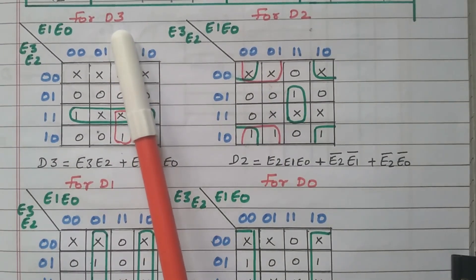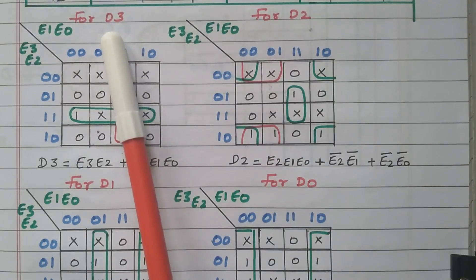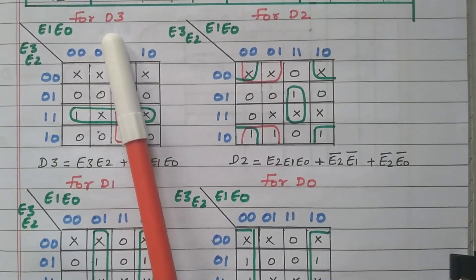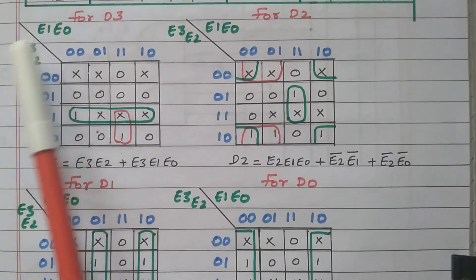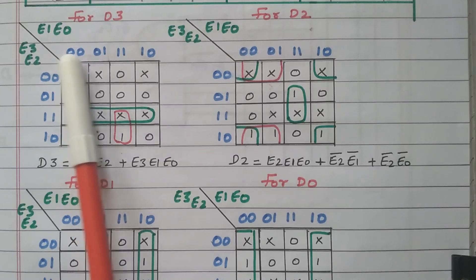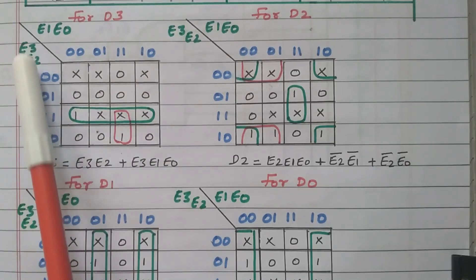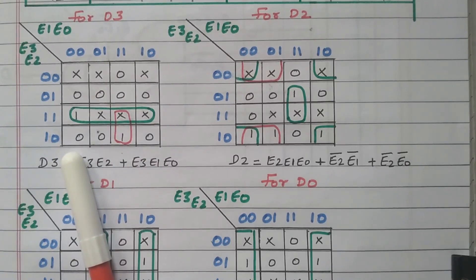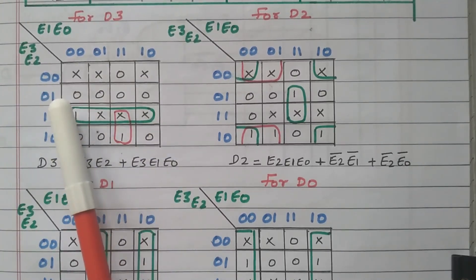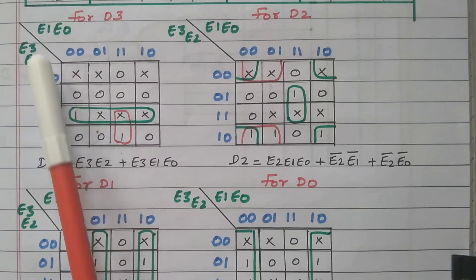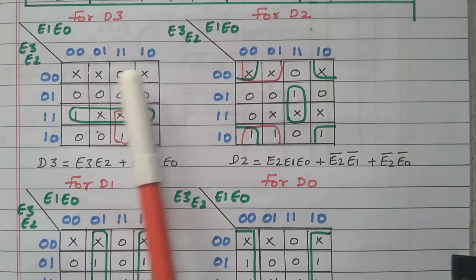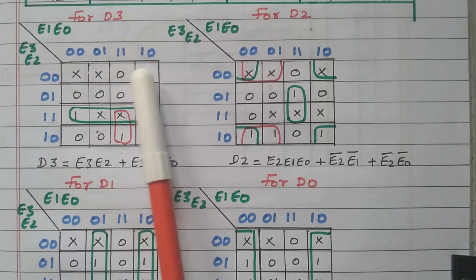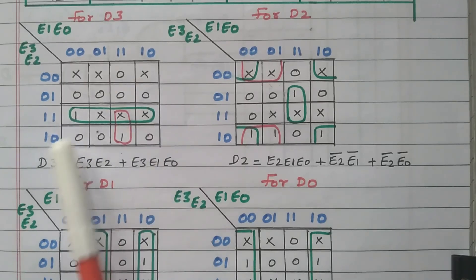Now we go to the K-map, starting with D3. The output is the BCD code and the input is the XS3 code: E3, E2, E1, E0. E3 and E2 are represented vertically — with 4 possible combinations — and E1 and E0 are represented horizontally, also with 4 combinations. There is an interchange between the third and fourth columns, and similarly between the third and fourth rows.